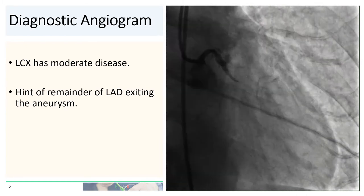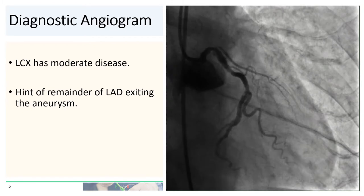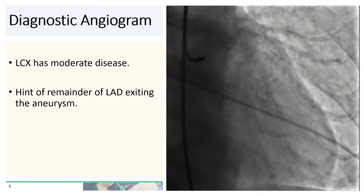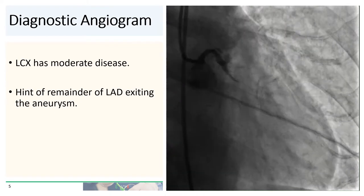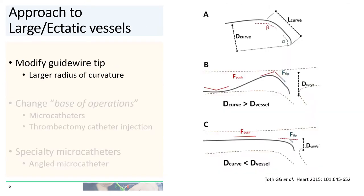One way to think about this problem is to approach it like trying to engage the side branch of a very large blood vessel. The first thing you would do is modify the guide wire tip — give it a very large radius of curvature so that it has enough reach to engage the outflow of the aneurysm. If the curve is too small, there simply won't be enough reach to engage the wire into the outflow of the aneurysm.